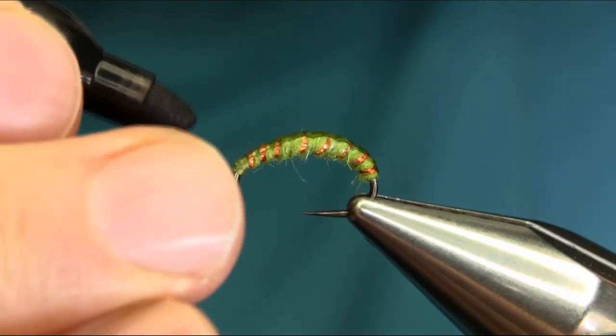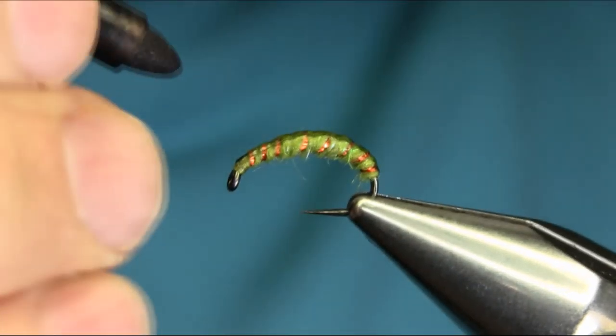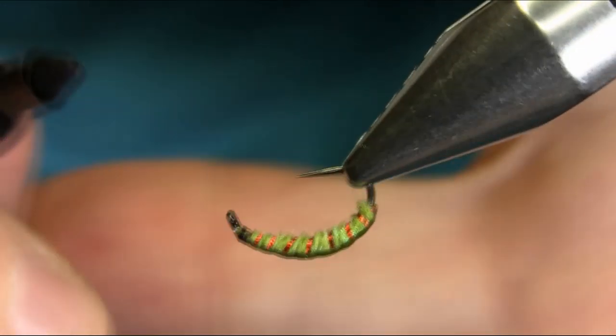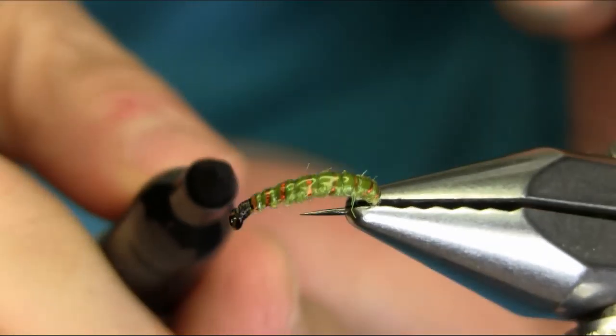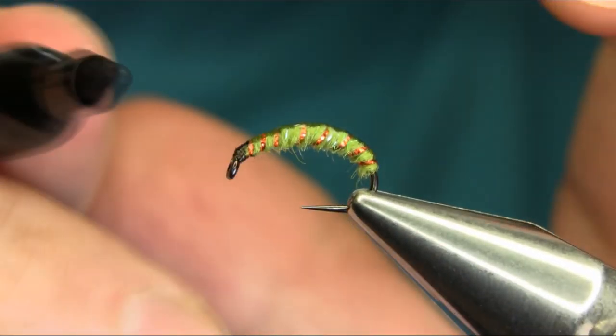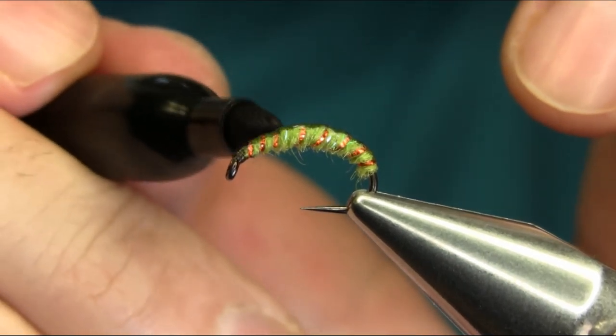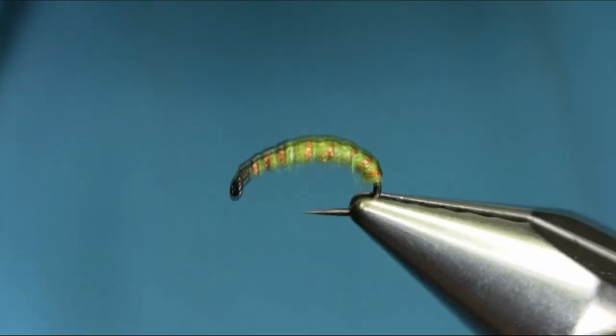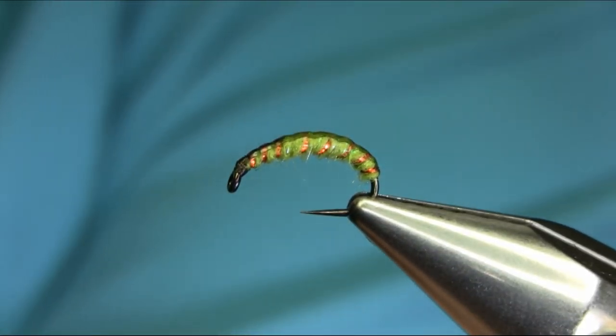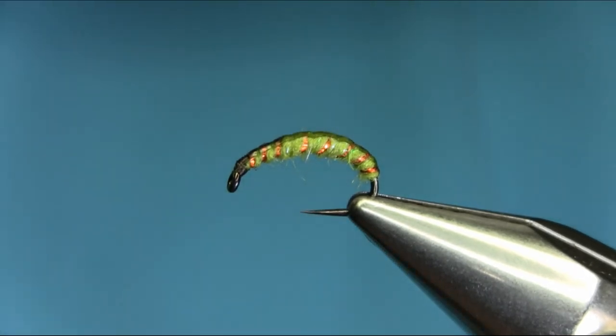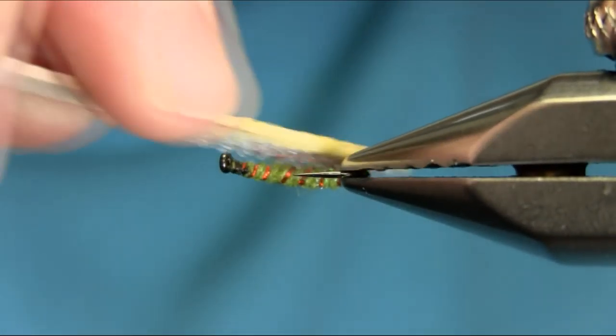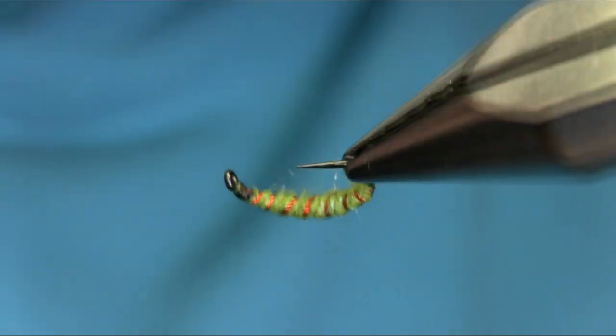That's what we need is a black marker. And just some more varnish. Actually, before you put varnish, just use some light brush to release some fibre. Give a little buggy effect.